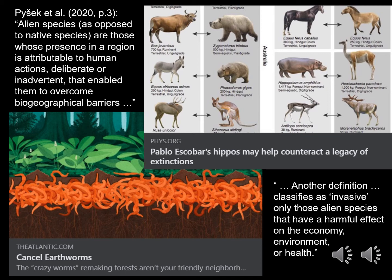So, for example, Pablo Escobar's hippos do count as alien species, but as they have a benign effect on the ecosystem, they do not count as invasive. Whereas some innocent-looking worms do qualify for invasive status.